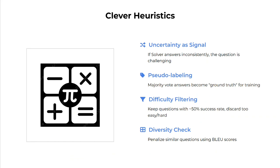The reward system works using uncertainty as a signal. If the Solver answers the question inconsistently, the question is considered challenging. The same question generated by the Challenger is input multiple times to check whether the Solver can answer it. If it answers sometimes, it's a good question. Questions that are always solved or never solved — either too easy or too hard — are filtered out. Pseudo-labeling applies a majority vote to determine the ground truth for generated questions. Difficulty filtering keeps questions with around a 50% success rate — if the Solver answers 5 out of 10 times, the question is considered appropriately confusing.